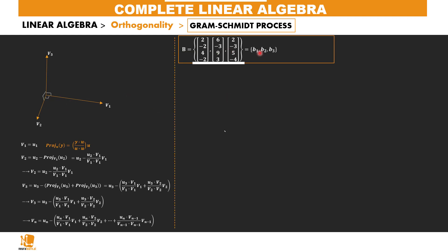Let's take an example. Say we have this base and we want to orthogonalize it. We have that B1 equals the first vector b1 — its resultant orthogonal vector is B1. Then for two vectors, B2 equals b2 minus the projection of B2 on B1, giving B2 minus (B2 dot B1 divided by B1 dot B1) times B1, which is just application of the formula we had.